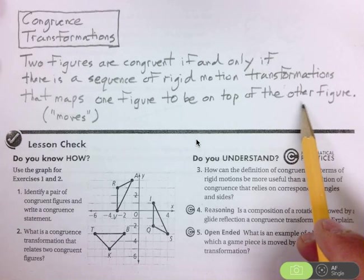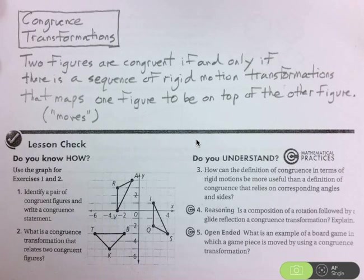This sequence has to map one figure to be on top of the other figure. Then the two figures are congruent, and what's cool is it doesn't just have to be triangles. This can work for segments, quadrilaterals, or any kind of figure. These are called congruence transformations.